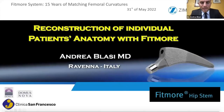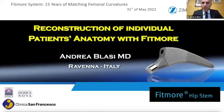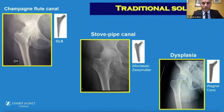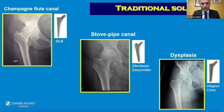Good evening everyone. My name is Andrea Bellasi from Ravenna, Italy, and today we are going to speak of reconstruction of individual patient anatomy. Traditionally, we choose the stem in relation to the internal anatomy of the femur: if we have a champagne flute canal, we choose a CLS stem; if we have a stovepipe canal, we choose an Alloclassic Müller stem; and if we have dysplasia, we choose a Büchner core stem to correct rotation.